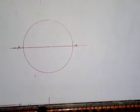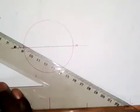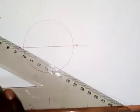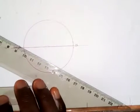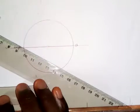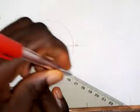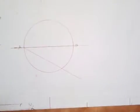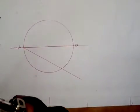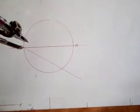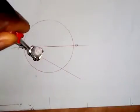What I need to do now is to take my set square and set it like this, then draw a line from here. I'm going to take my compass at any convenient radius and make seven marks on this line.